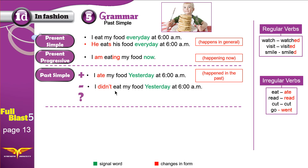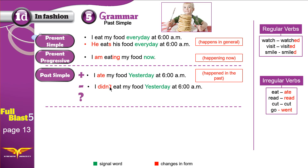I didn't eat my food yesterday at 6 a.m. Notice: now I'm using the verb in the basic form — 'eat,' not 'ate.' When you use 'did' — whether in negative or question form — you keep the verb in the basic present form.